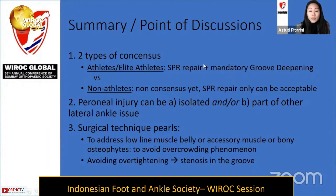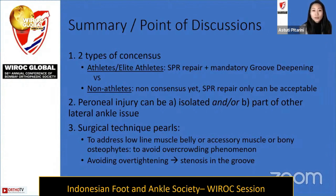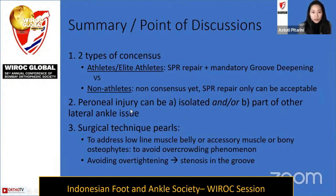The summary and take-home message: understand the available consensus in treating peroneal tendon injury. There are two types of consensus at the moment — treating elite athletes versus non-athletes. For elite athletes, mandatory groove deepening with soft tissue repair is required. For non-athletes, there is no consensus yet, meaning SPR repair alone can also be an option. Understand that peroneal injury can be an isolated problem or part of a lateral ankle issue; therefore, addressing associated injuries such as the peroneal tendon itself can increase satisfactory results in treating patients with ankle injury.